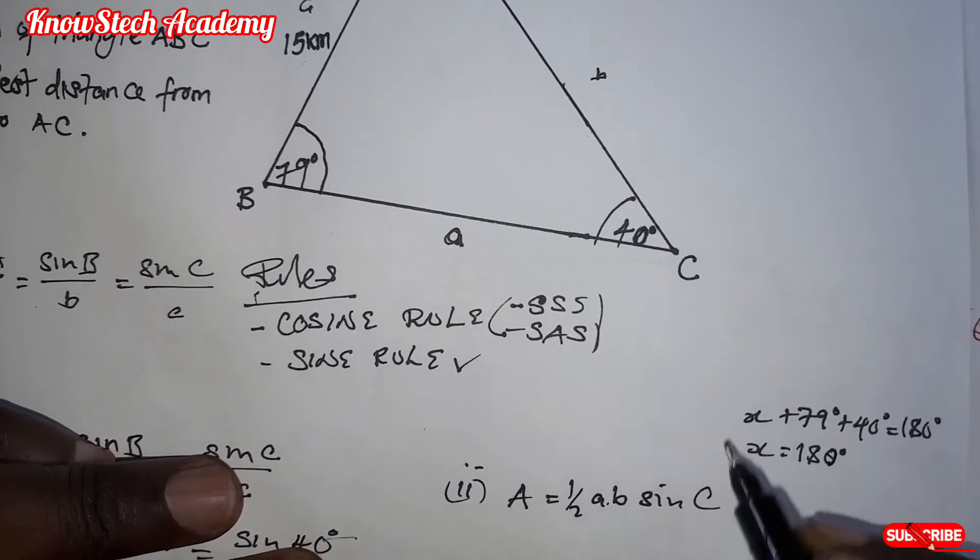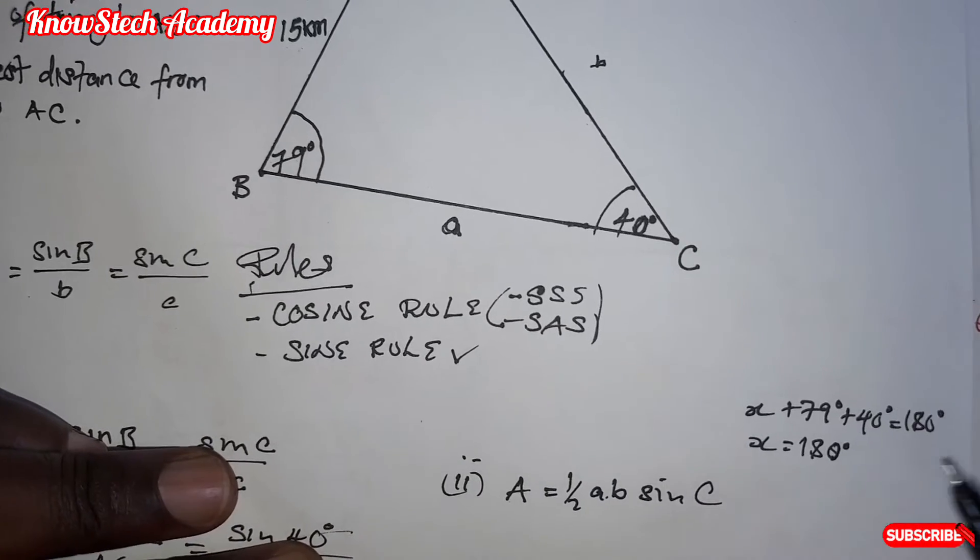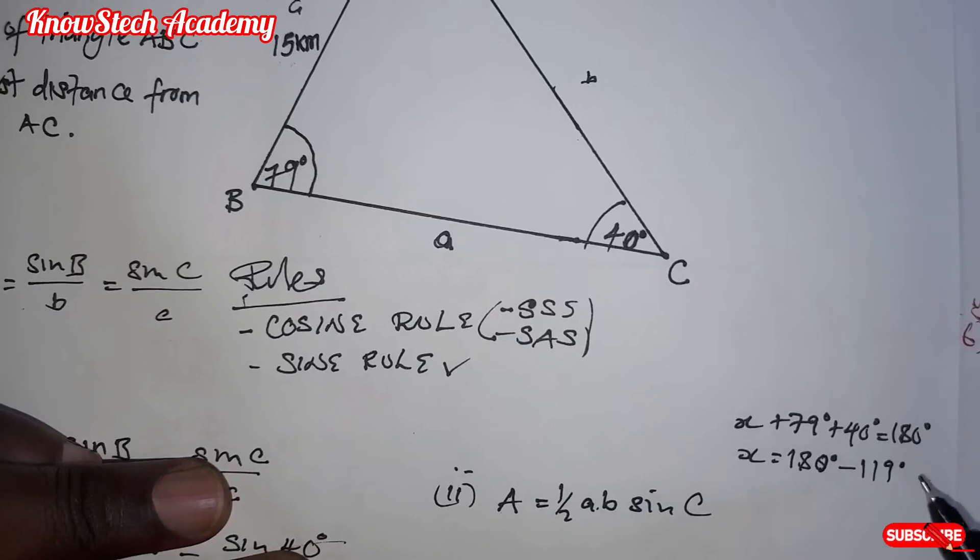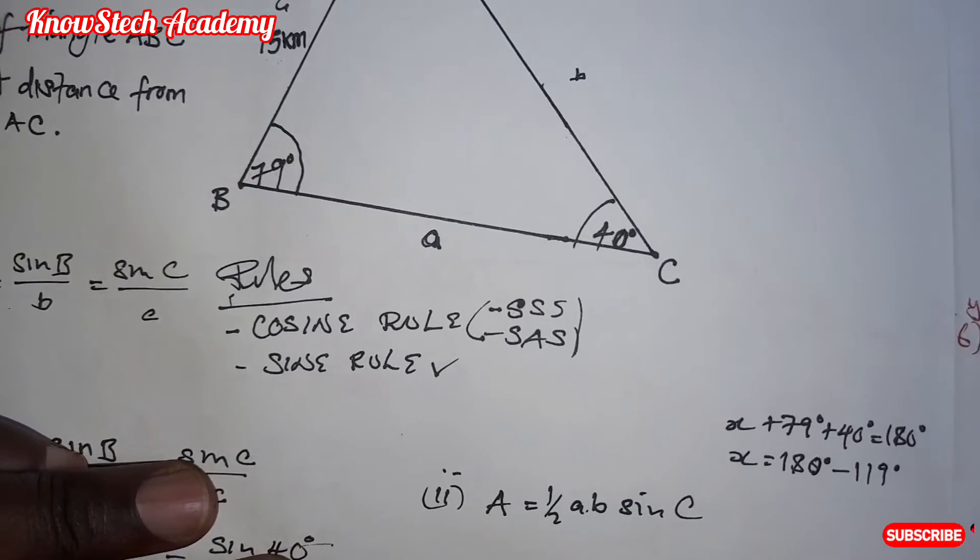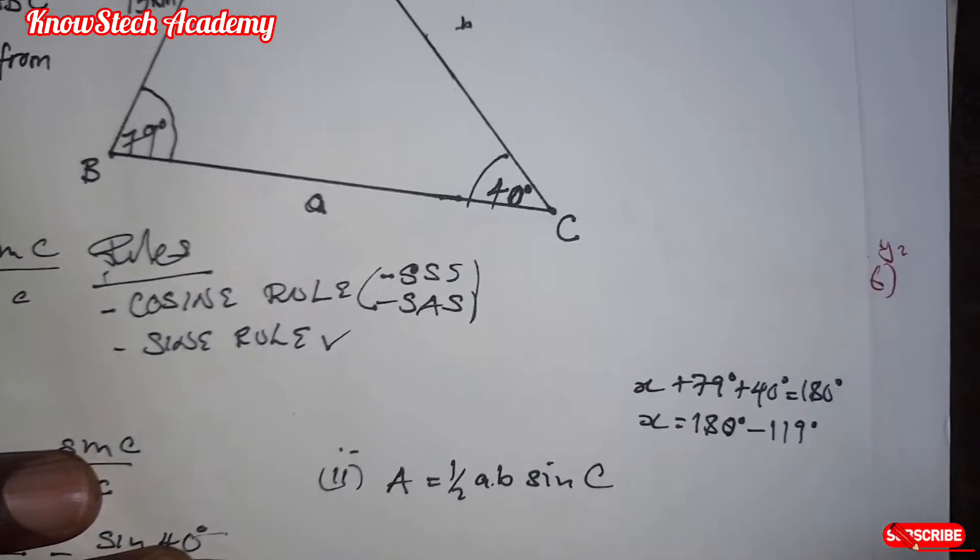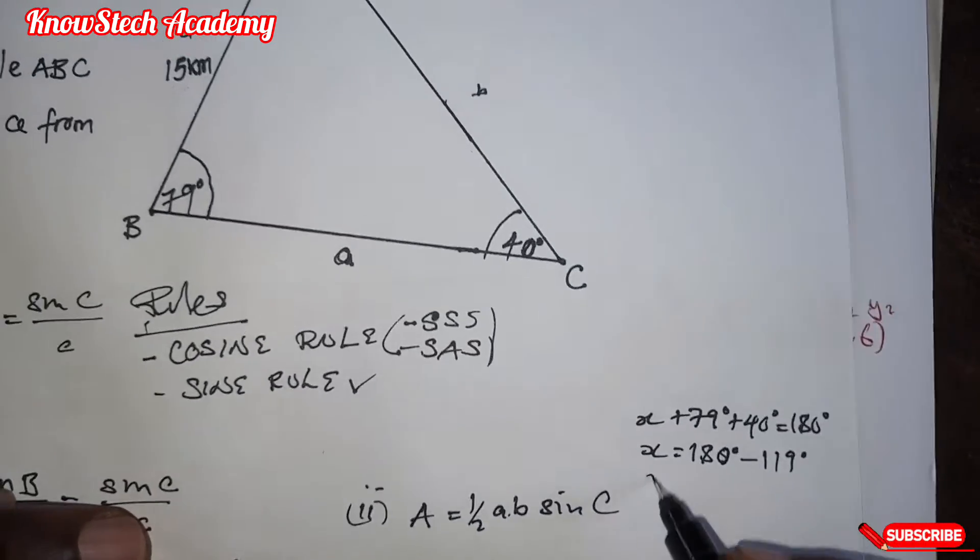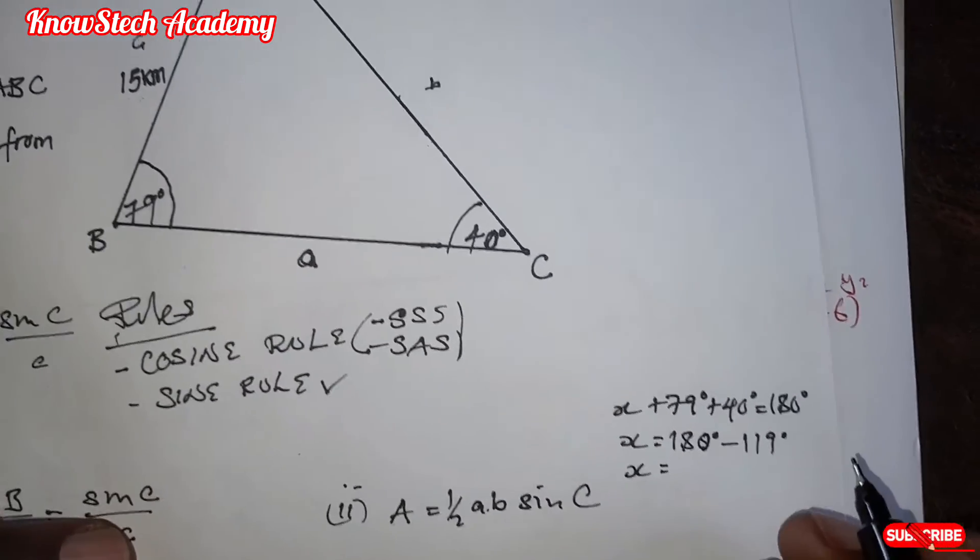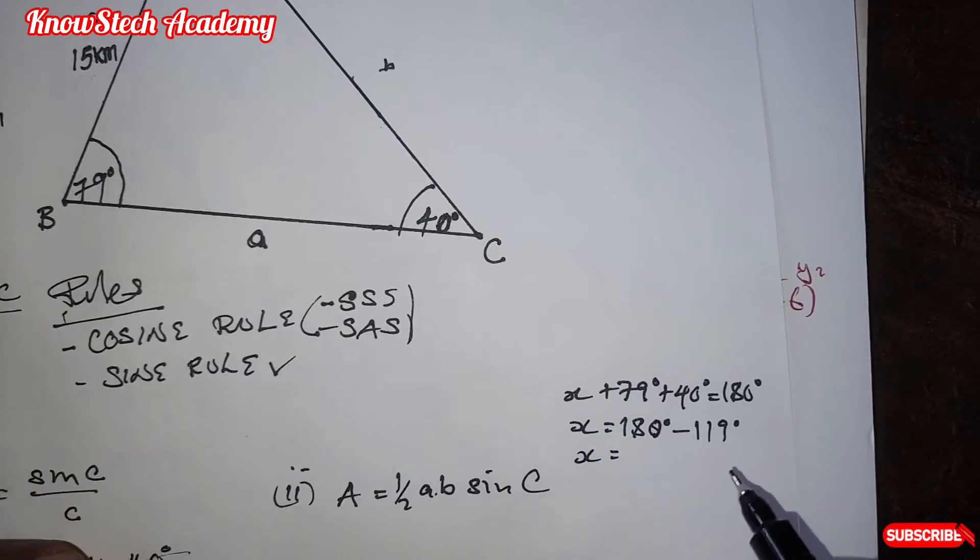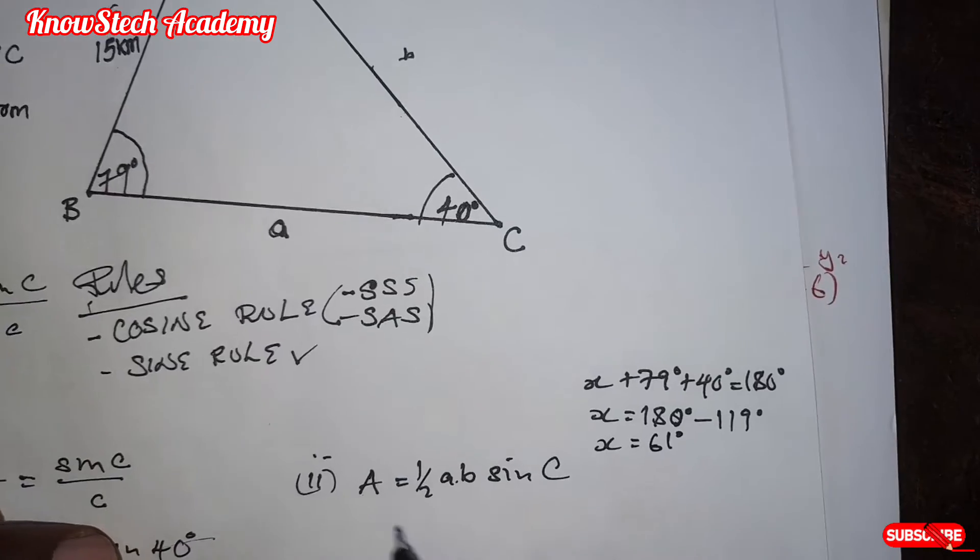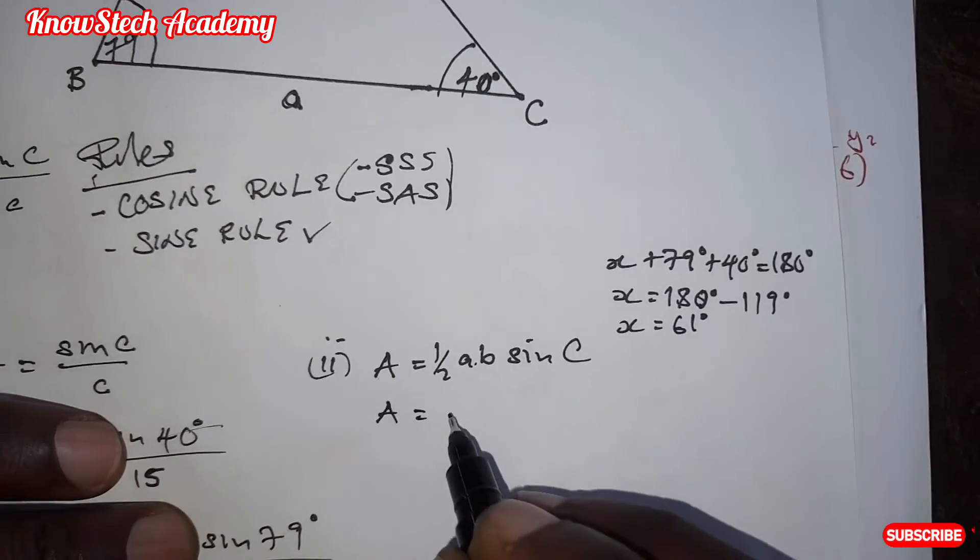So X is equal to 180. When you add 79 plus 40, you have 119. So 119 will cross and becomes negative 119. So when you subtract here, 180 minus 119, you find 61 degrees. So here, actually, you're going to substitute with 61.